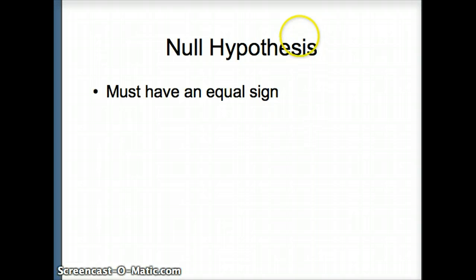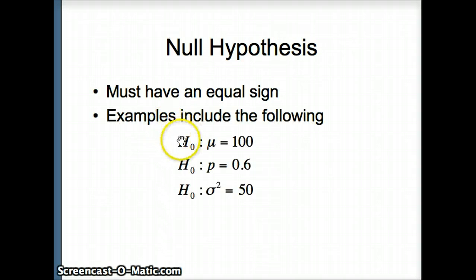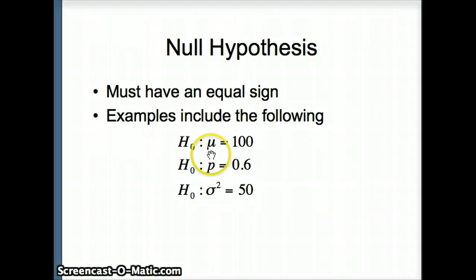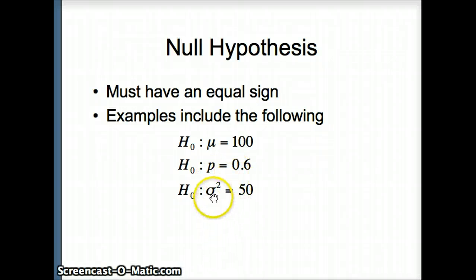The null hypothesis must contain an equal sign. The symbol we use for a null hypothesis is H sub 0. So you'll notice all null hypotheses have equal signs. H0 could be mu, the parameter, equals 100. It could be p, the population proportion, equals 0.6. It could be the variance, sigma squared, equals 50.